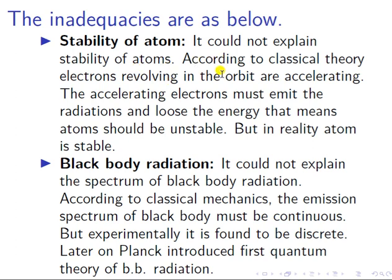Classical mechanics is not able to explain the stability of the atom. According to classical theory, electrons are revolving in an orbit and they are accelerating. Accelerating electrons must emit radiation, which means they lose energy, and therefore the atom cannot be stable. But in reality, the atom is stable — this was explained later by Bohr's theory through quantization of the orbit, where angular momentum is an integral multiple of h/2π.